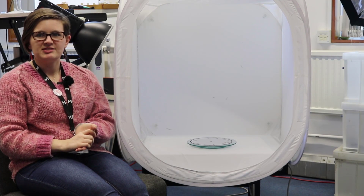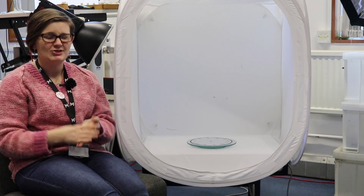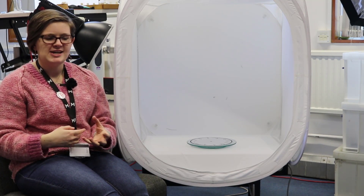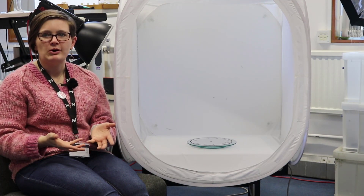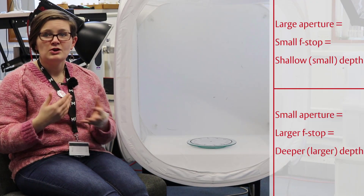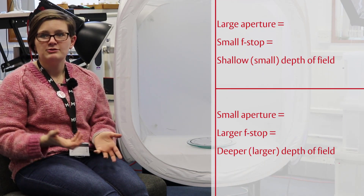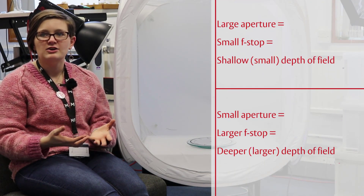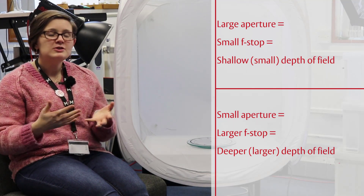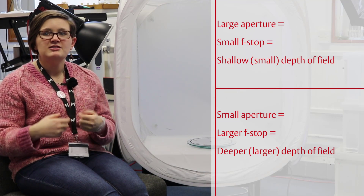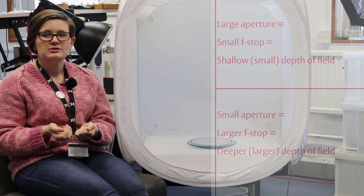When photographing objects in photogrammetry, and with photography in general, there is a balance between depth of field and image sharpness — and these two are not the same thing. Depth of field is how much of the image is in focus, not how sharp that focus is. Large apertures have small f-stops, which produce a shallow, small depth of field. Smaller apertures, which confusingly have a larger f-stop, have a deeper, larger depth of field.